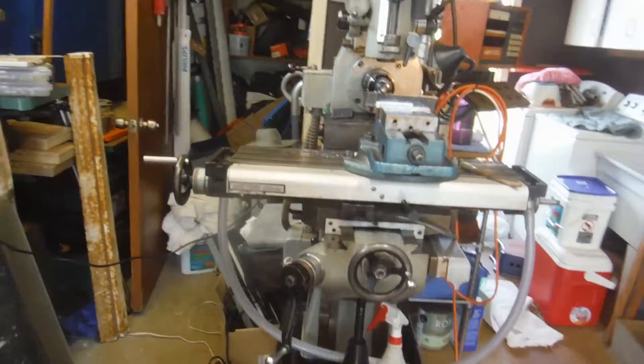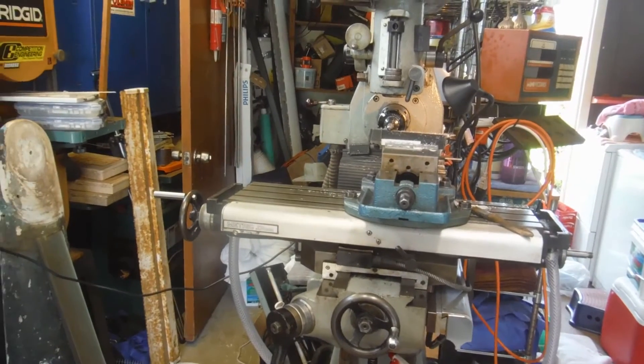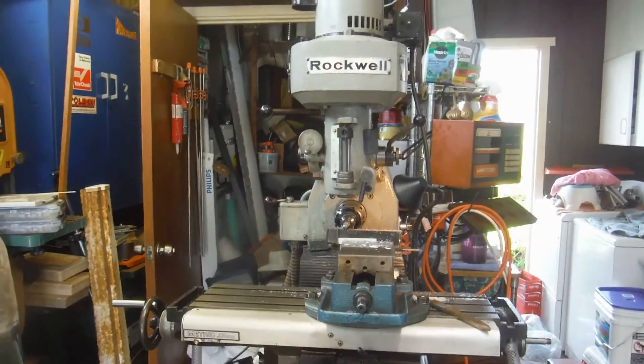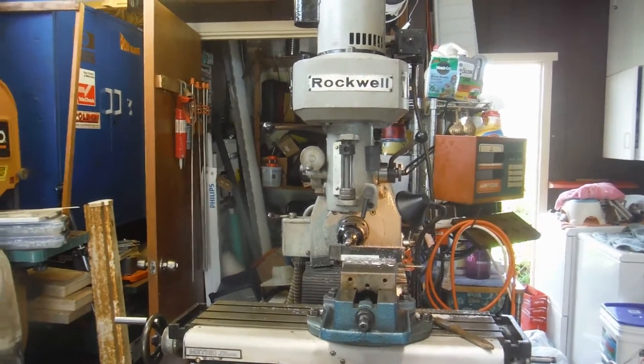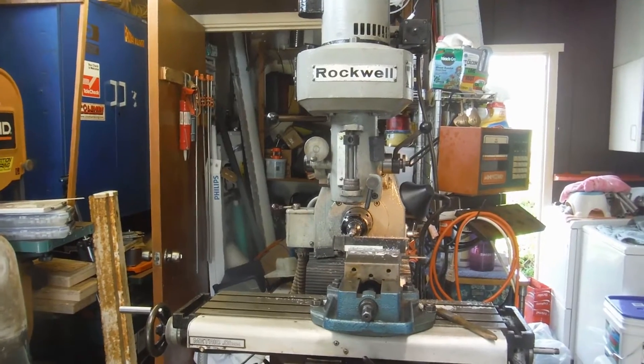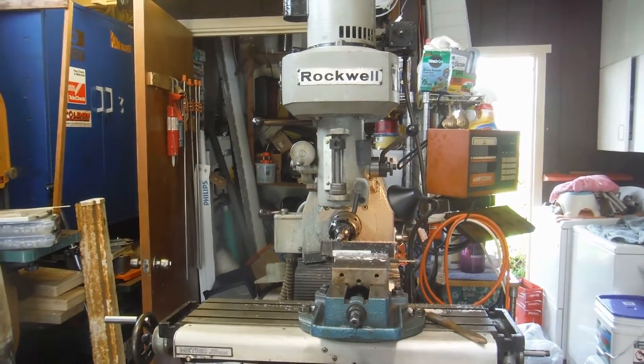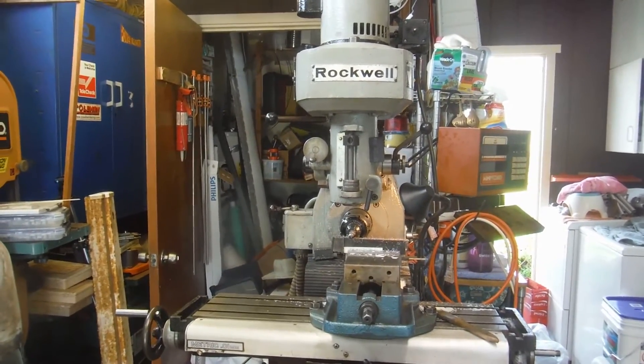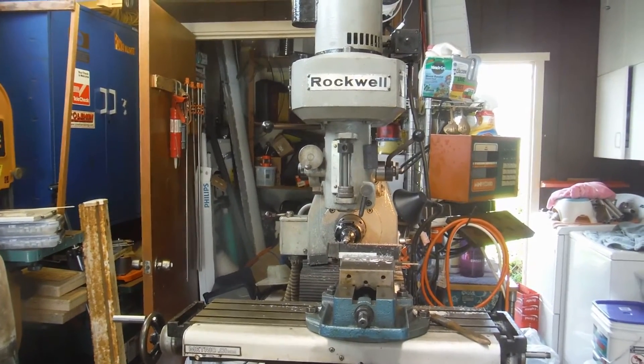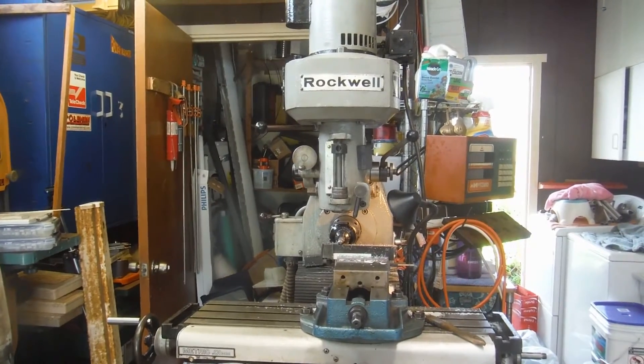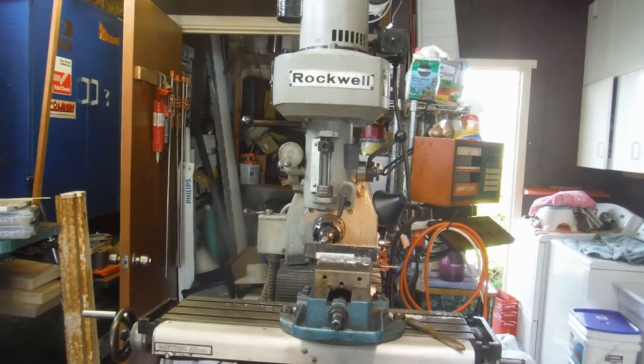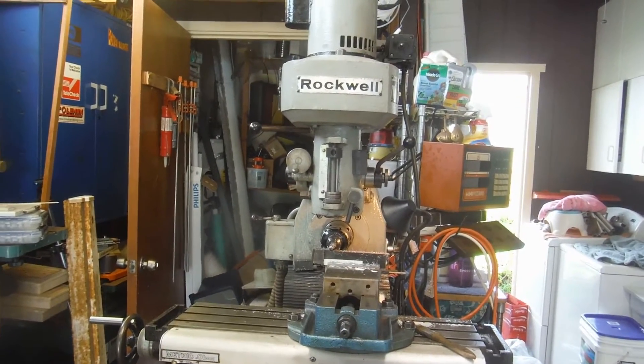To get started, the best source of information I've found on this machine so far is a US Army manual on the three different machines that Rockwell put out. I downloaded it from VintageMachinery.org online. I have donated a little bit of money and I'll continue to do so because they're a very good source of information. It's a PDF file, and then I printed it and put it in a binder.